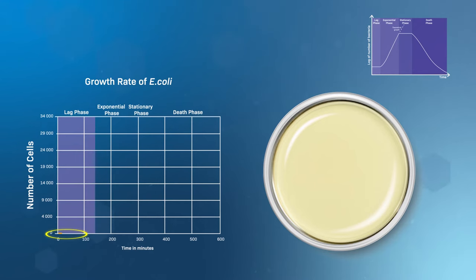If an initial E. coli cell culture started with one cell, after two and a half hours of growth, there would be more than 500 cells.